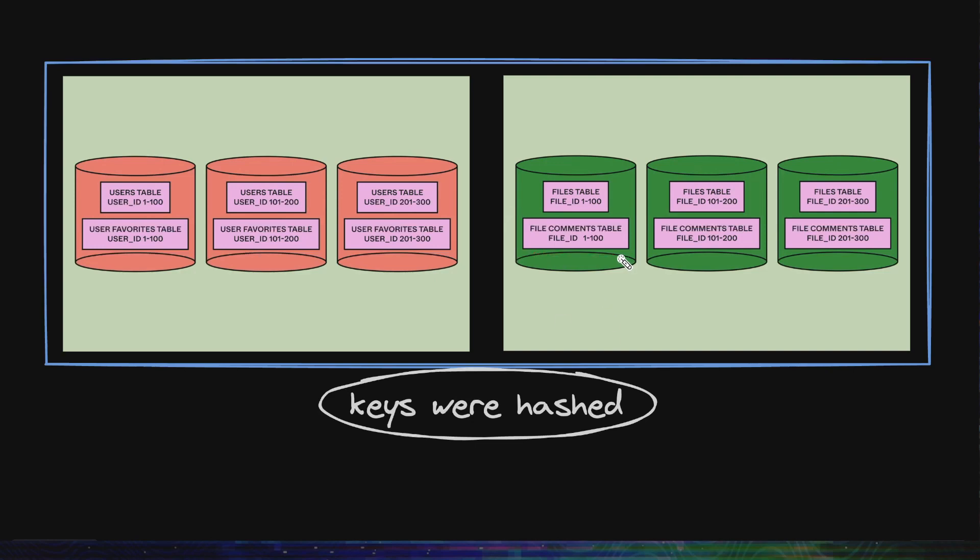Another problem is that some ranges of user ids or file ids will have much more traffic than others. So some shards might receive more traffic than others. Let's say file_id 1 to 100 is getting much more requests than the others. This shard will have much more load than these shards. So they need some way to equally distribute the file ids in all the tables. So they decided to hash their keys. On hashing, it didn't follow the order, so the keys would be equally distributed in all the shards.